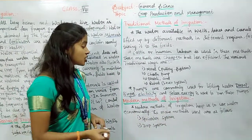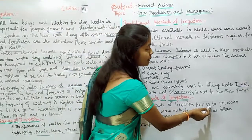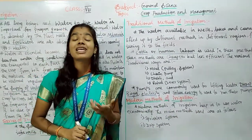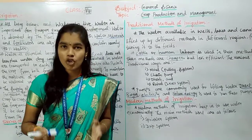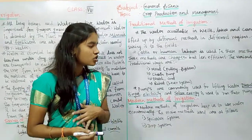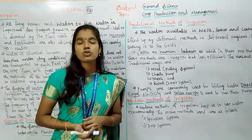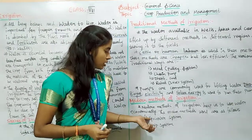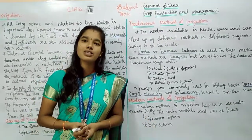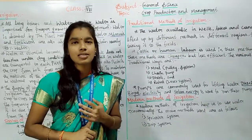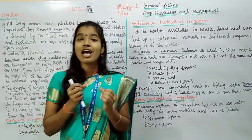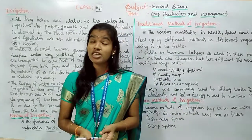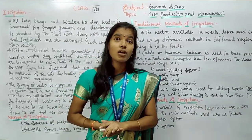In modern methods of irrigation, water is used economically. The two main modern methods are: the sprinkler system and the drip system.